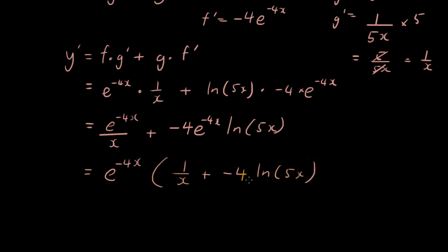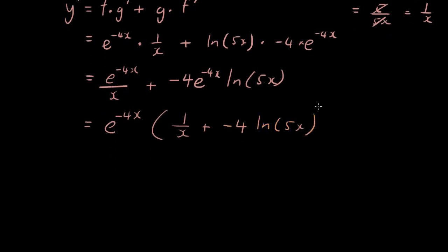You can see 1 over x and negative 4 ln 5 x, they have nothing in common. So let's move the negative 4 x to the bottom of the fraction, because normally we want to keep the powers positive. And then 1 over x plus, let's just do minus 4 ln 5 x. So that is my final answer.